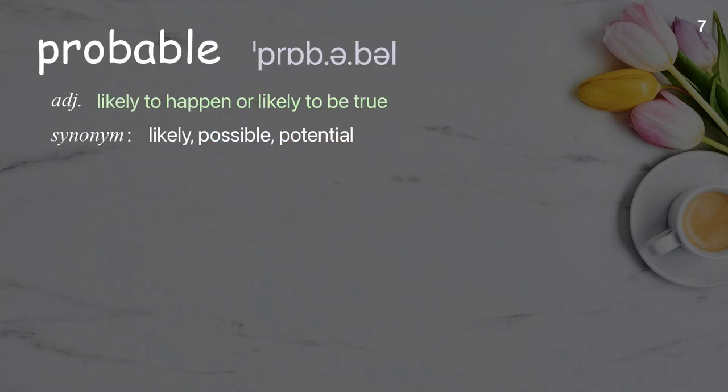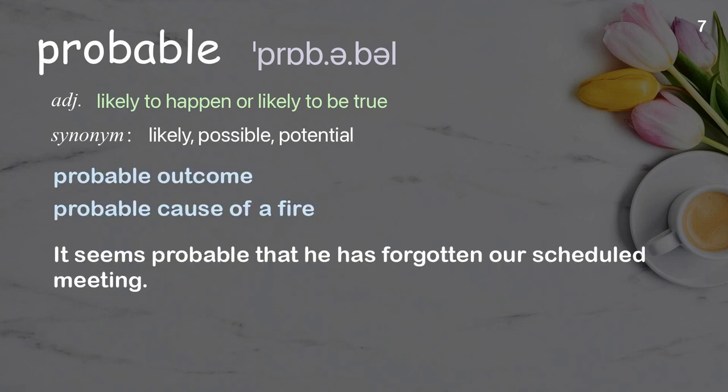Probable: likely to happen or likely to be true. Examples: probable outcome, probable cause of a fire. It seems probable that he has forgotten our scheduled meeting.